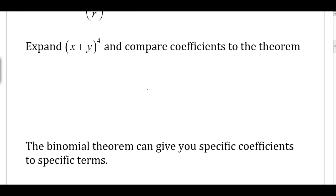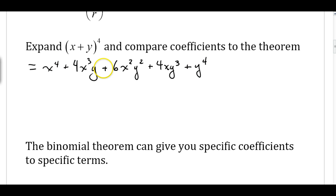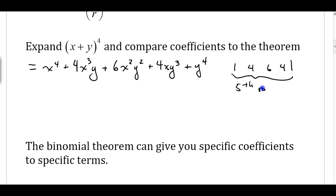We looked at the expansion of x plus y to the 4th in class. When we expanded this, we got x to the 4th plus 4x cubed y, plus 6x squared y squared, plus 4xy cubed, plus y to the 4th. We noticed a pattern in the exponents: the x exponents go from 4, 3, 2, 1, down to 0, and the y exponents go from 0 up to 1, 2, 3, 4. The coefficients are 1, 4, 6, 4, 1 — which is the 5th row of Pascal's triangle.